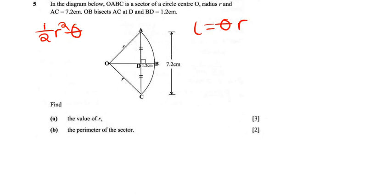So I want to find the value of R. Looking at what we have, we've been given the length of AC. We are told OB is a bisector, so it's dividing 7.2 into half — so 3.6 there and 3.6 here. Now OB itself is also the radius because it's a length from the center to the circumference, so OB is also the radius.